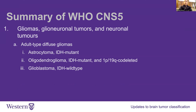Within the gliomas, glioneuronal tumors, and neuronal tumors, they classify those into adult-type diffuse gliomas with three categories: astrocytoma IDH mutant; oligodendroglioma IDH mutant and 1P19Q co-deleted; and glioblastoma IDH wild type. IDH, called isocitrate dehydrogenase, is a marker seen in some tumors. It tends to indicate a slower-growing tumor that's usually been there for several years. It's a hallmark of astrocytomas and oligodendrogliomas.